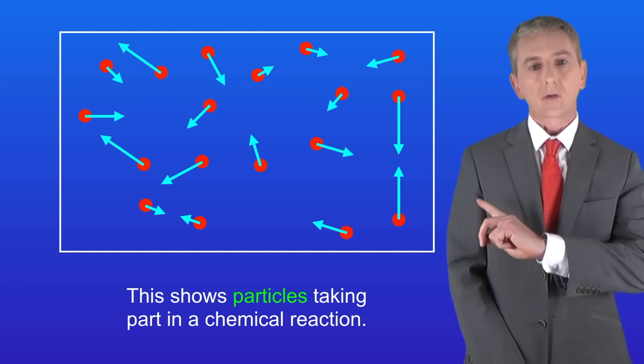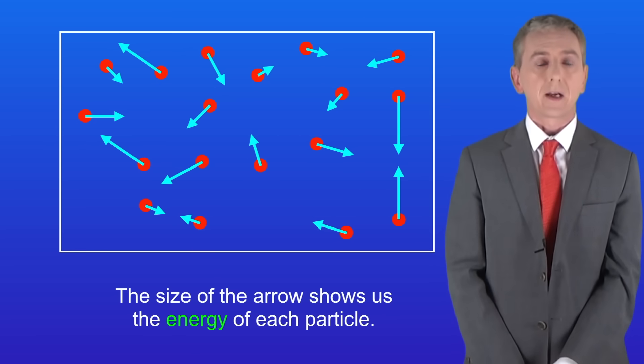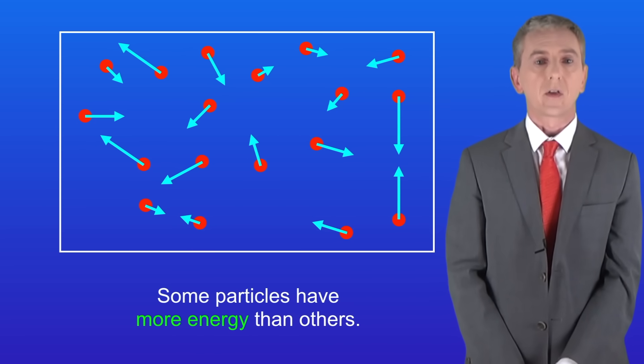Take a look at this diagram. This shows particles taking part in a chemical reaction. The size of the arrow shows us the energy of each particle. As you can see, some particles have more energy than others.